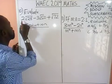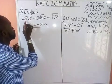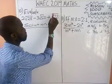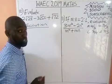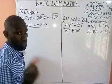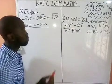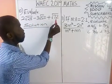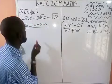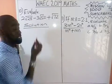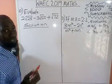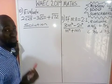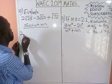Question 10: we have 2√28 minus 3√50 plus √72. The first thing we are going to do is break each term down. We are saying 28 is the same as 4 times 7.